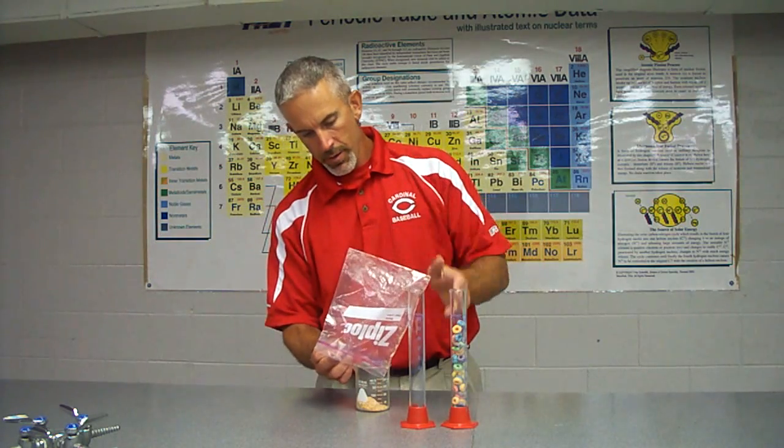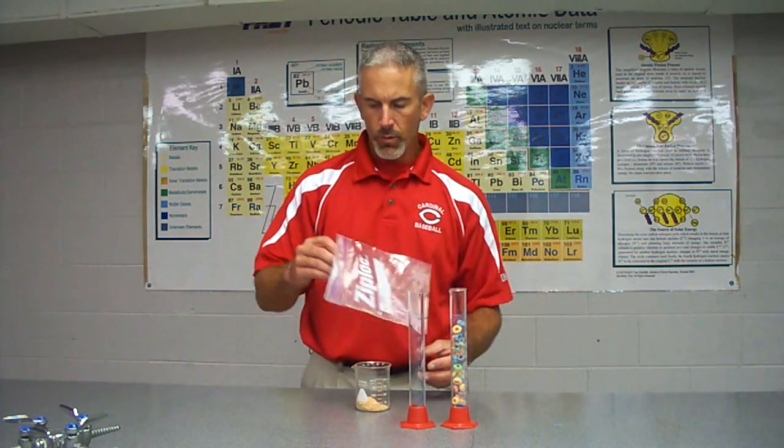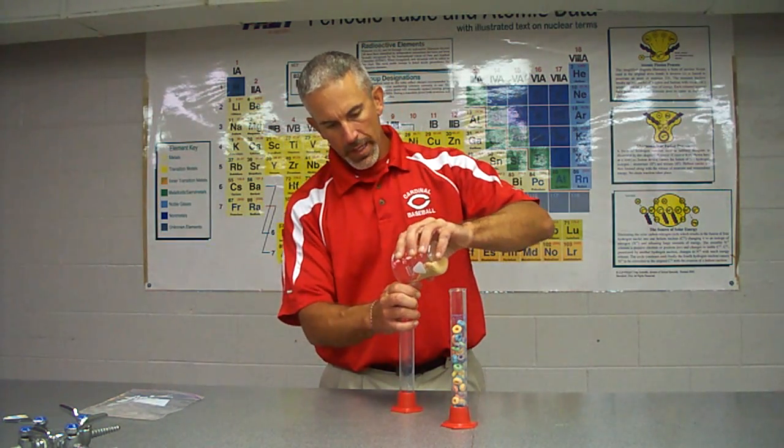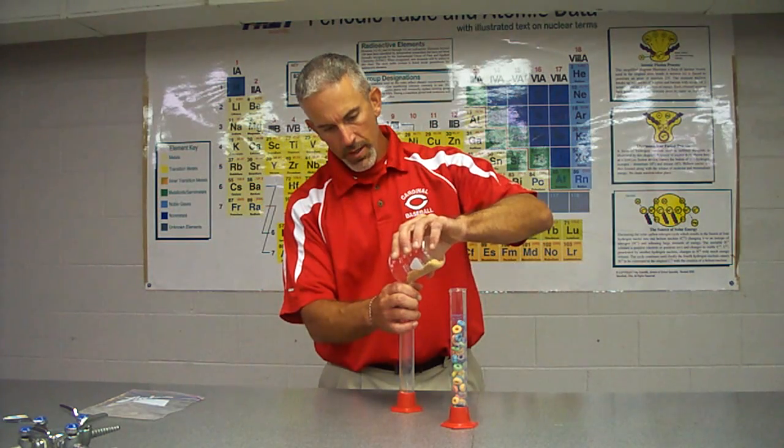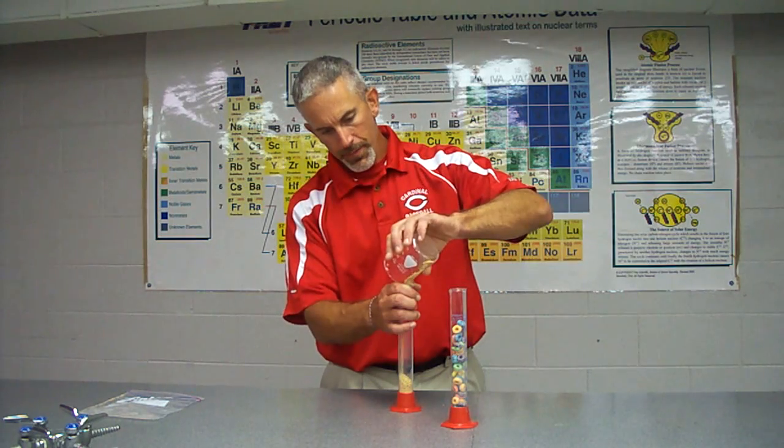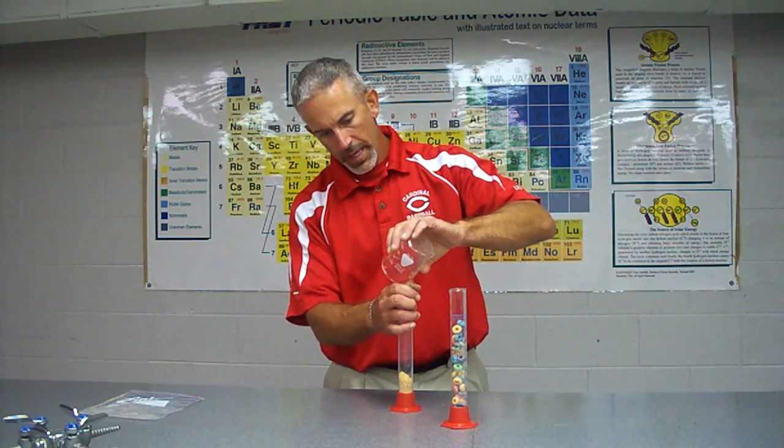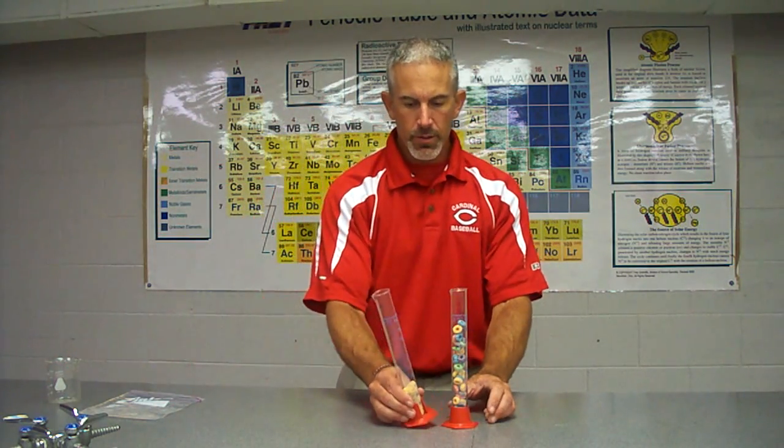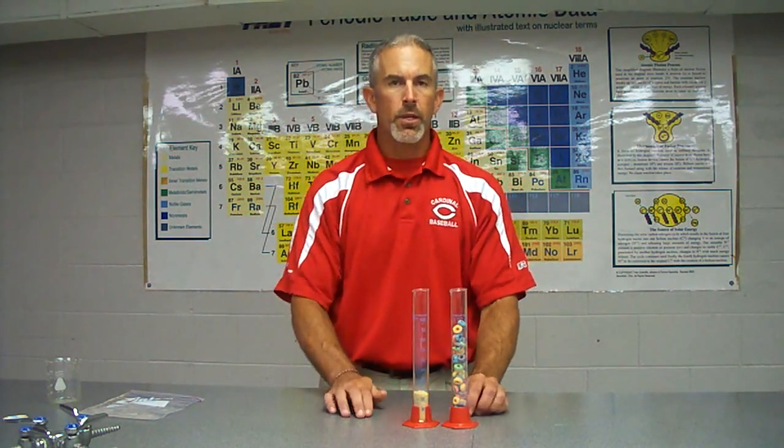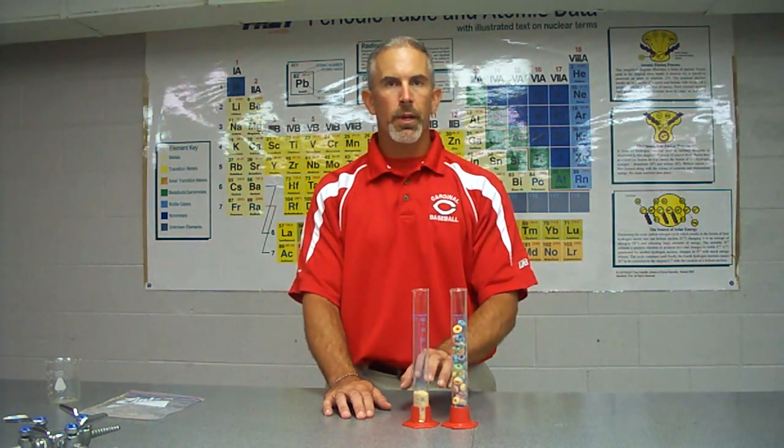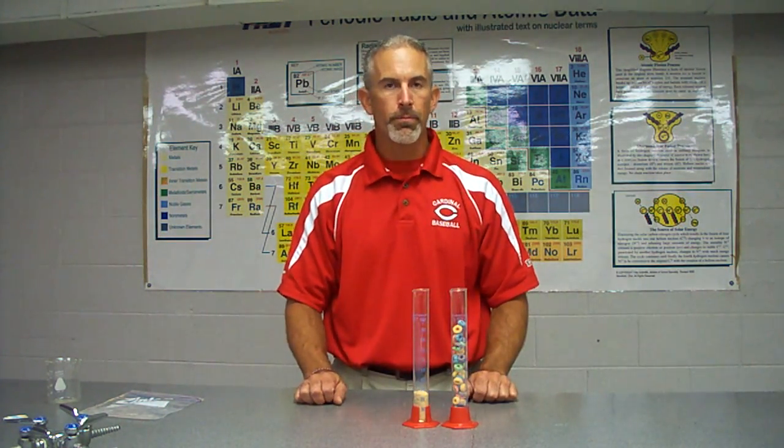However, when we put the same cereal with the same amount of particles back into the cylinder, we can see that the mass of course did not change because we didn't lose or gain any cereal. However, we can see that the amount of space the cereal takes up is much less. Therefore we say the density is different. Simply because we're taking the same amount of matter, the same amount of stuff, and we're compacting it into a smaller volume.